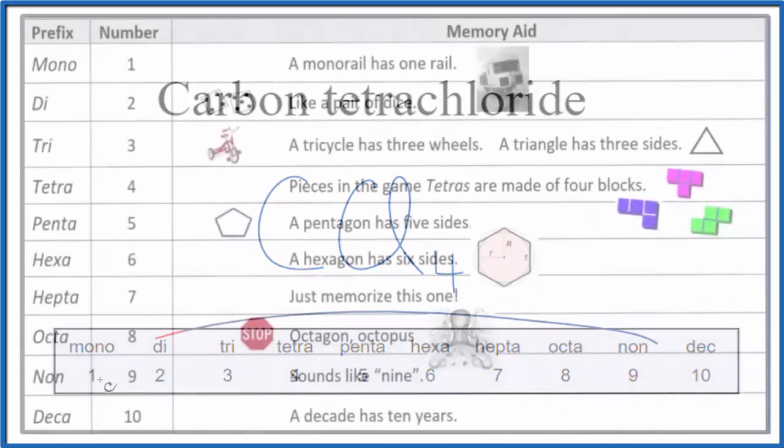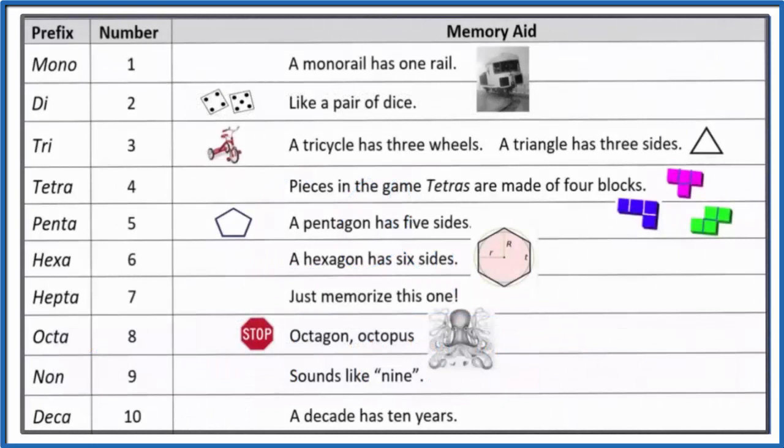If you need help memorizing these prefixes, this is a table that will help you remember them. This is Dr. B with the formula for carbon tetrachloride, CCl4. Thanks for watchin'.